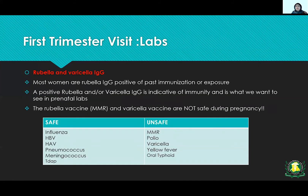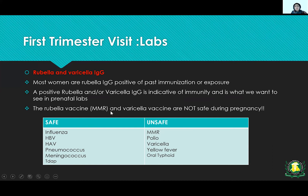Test for rubella and varicella IgG. Most women are rubella IgG positive from past immunization or exposure — a positive result is good, meaning the patient is immunized. The rubella vaccine and varicella vaccine are live vaccines and are contraindicated during pregnancy. There are safe and unsafe vaccines in pregnancy — know these, as they can come up on an exam.